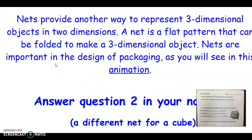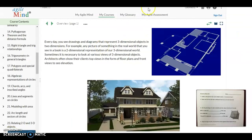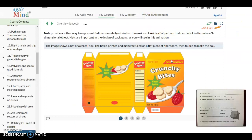So nets are a way to provide another way of representing a three-dimensional object in two dimensions. A net is simply a flat pattern that can be folded in order to make the three-dimensional object. Nets are really important in the design of packaging as you will see in this animation here. So we have a net of a cereal box. So it's a flat piece of cardboard and is printed and manufactured on a flat piece of that board, and then it's folded in order to make the box that you would obviously recognize as a cereal box.